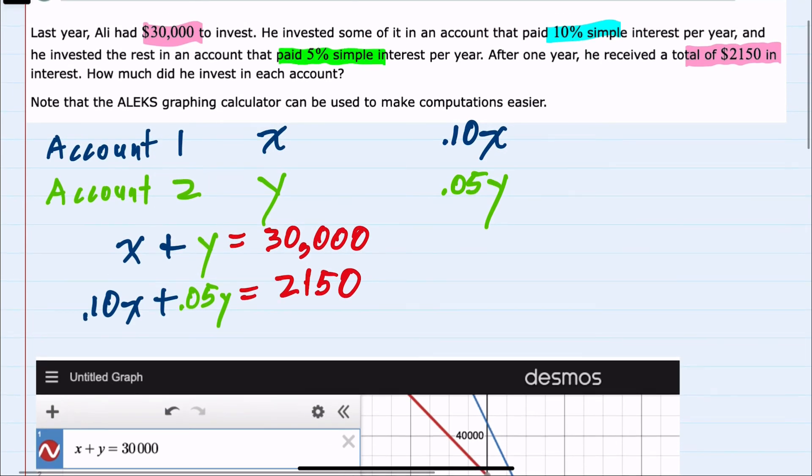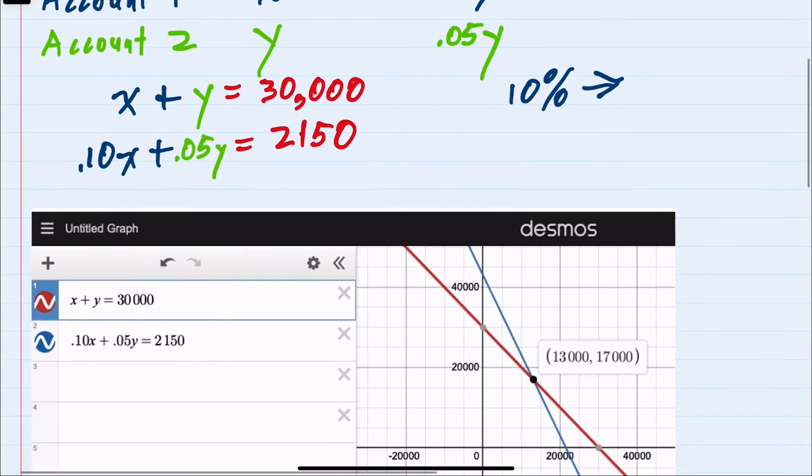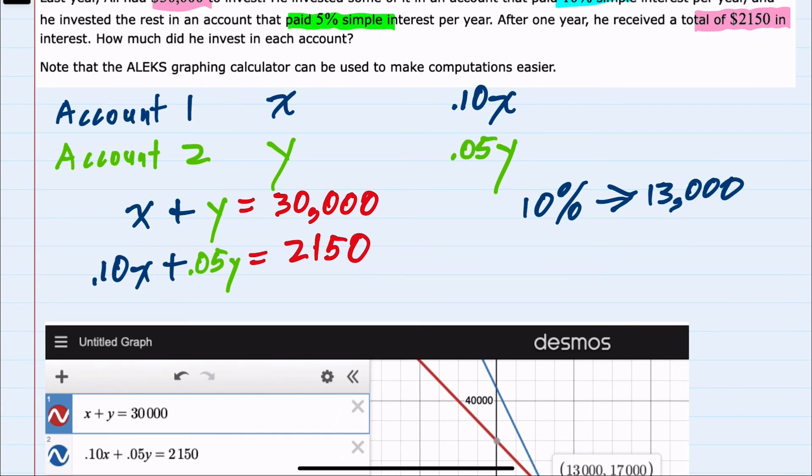So if we look back at our question, how much was invested in each account? The 10% account was our X value, or $13,000. And the second account at 5% is our Y variable, which is $17,000.